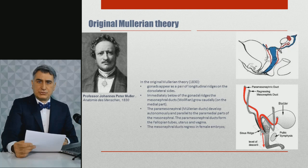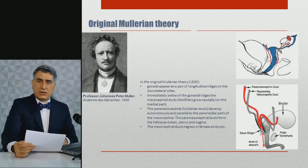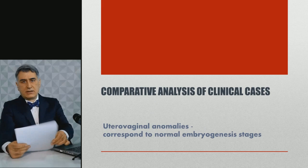The paramesonephral ducts form the fallopian tubes, uterus, and vagina. The mesonephral ducts regress in the female embryo. The uterus develops by fusion of both Müllerian ducts together and reduction of the intermedial septum by reabsorption in the craniocaudal direction.